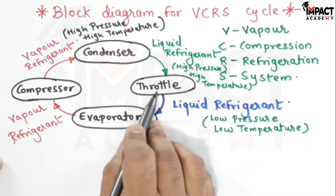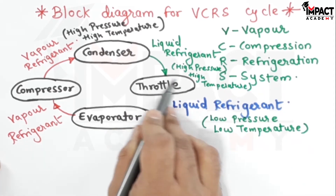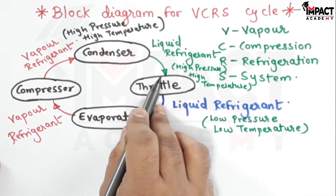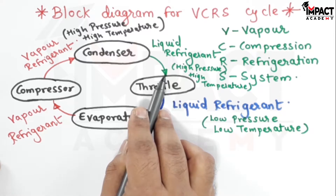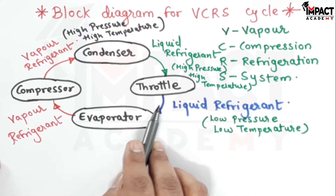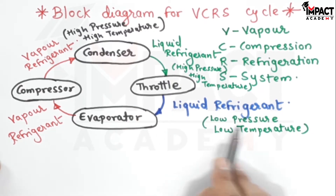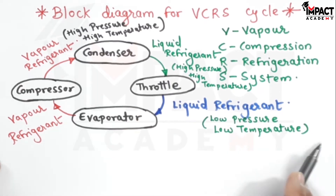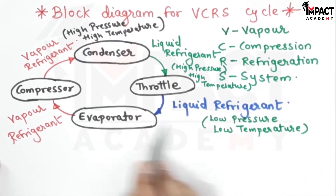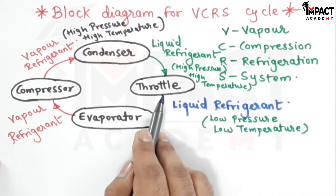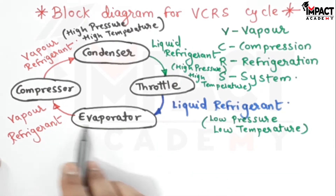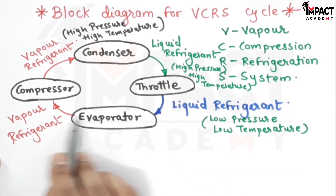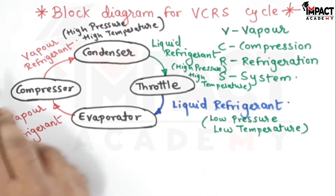This is at the entry to the throttle or expansion valve. Once throttling occurs, the pressure drops, the temperature drops, and the liquid refrigerant further goes into the evaporator and goes on absorbing heat.